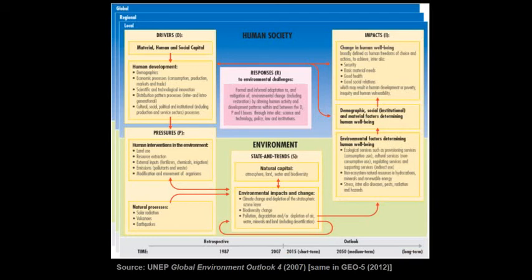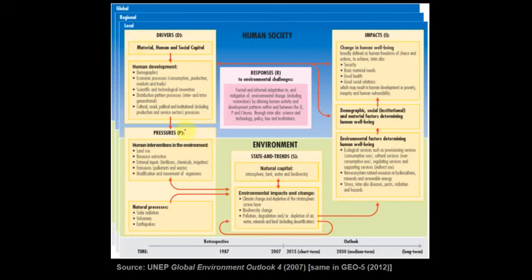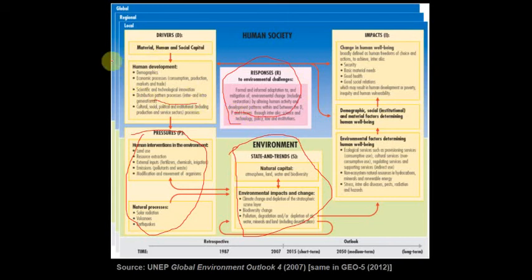The UNEP and Global Environment Outlook also has a variation. It looks more complicated but isn't really - you can see pressures, state, and response in it, plus drivers and impacts, and then they add layers of local, regional, and global scale. A framework that is really good to be aware of if you're looking at a particular protected area - your example from Canada, for instance - was developed by Mark Hockings, an emeritus professor here at UQ with the School of Earth and Environmental Science.